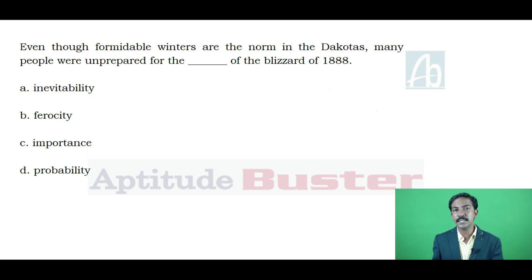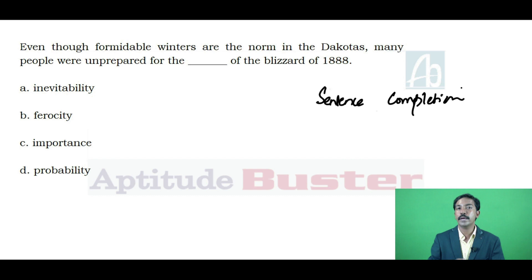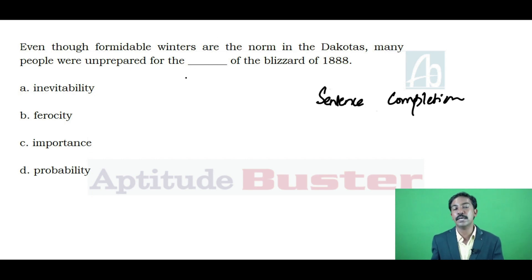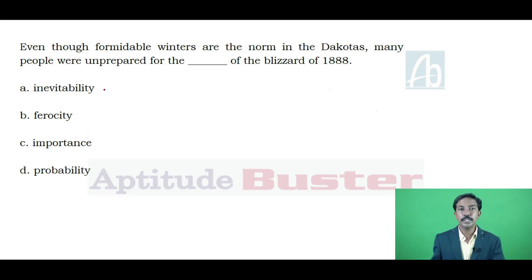Sentence completion exercises involve one sentence with either one blank or two blanks, followed by four options. I advise you to watch my video on sentence completion — it is available in my app, Appitude Buster. I will proceed with the presumption that you've already gone through it, so you can easily grasp how these questions are to be approached, and most importantly, how to save time. Step one: hide the choices. Step two: read the sentence. Step three: predict a word for the blank based on the contextual clue. Even though formidable winters are the norm in the decadence — from the first segment, 'decadence' refers to a place.